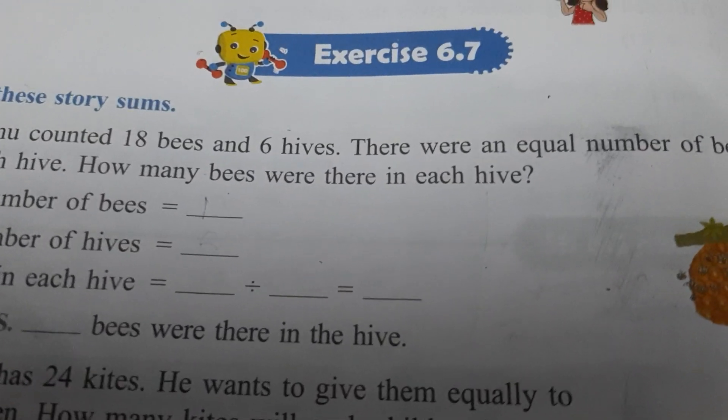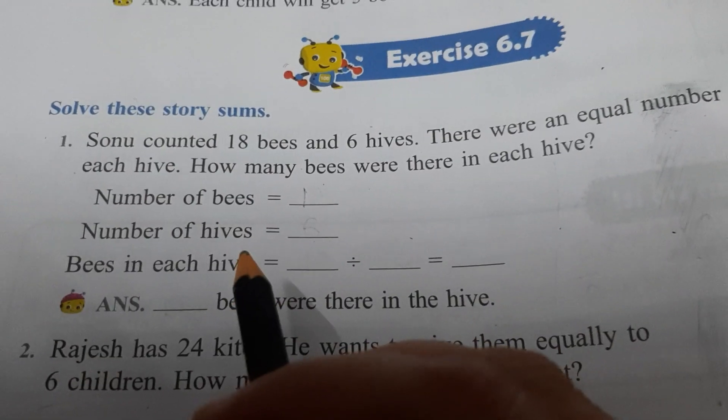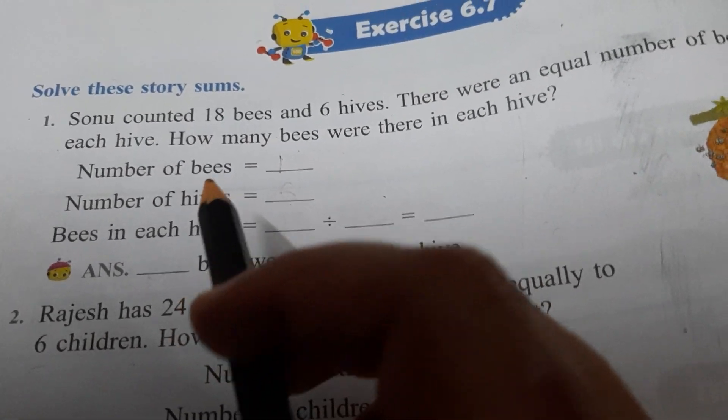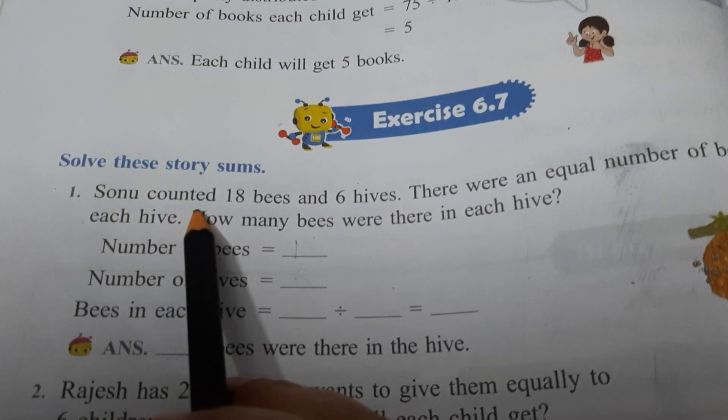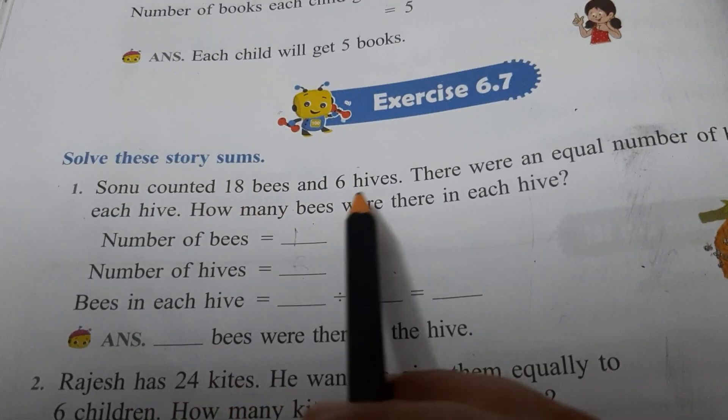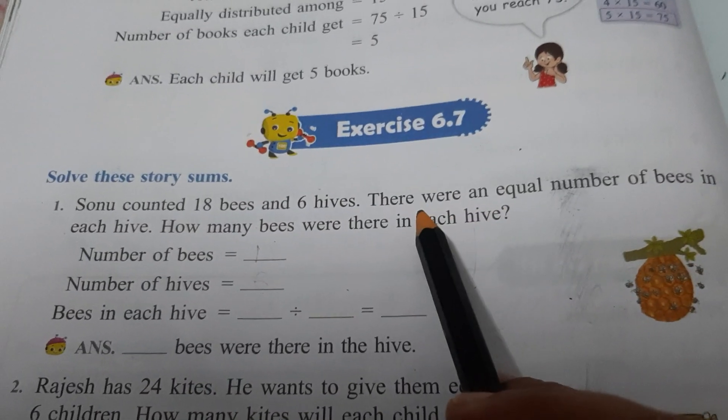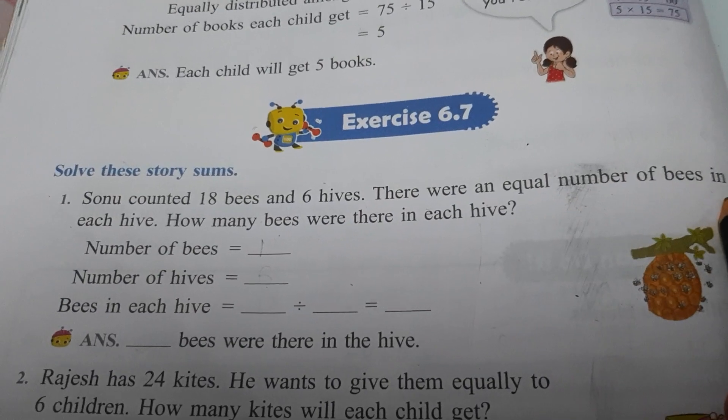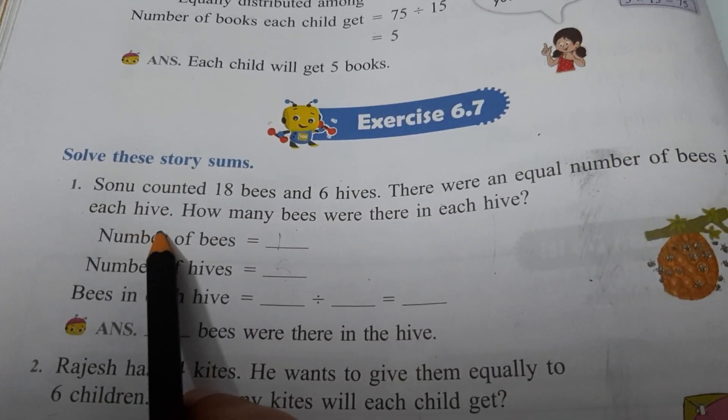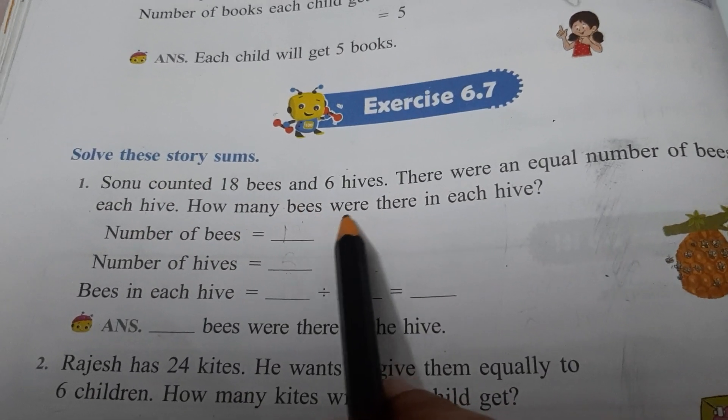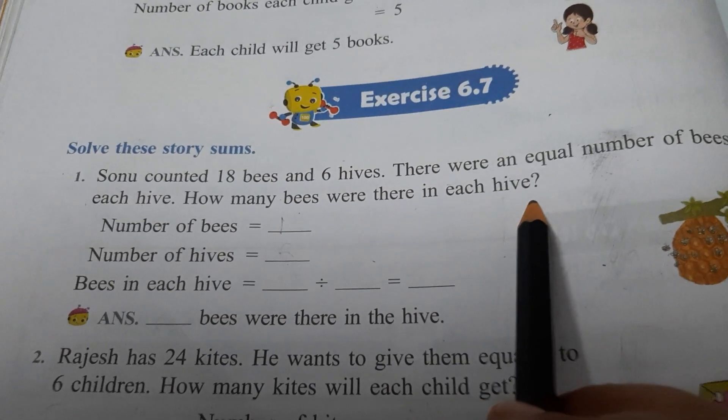So first we will read the statement and we will understand that. Sonu counted 18 bees and 6 hives. There were an equal number of bees in each hive. How many bees were there in each hive?